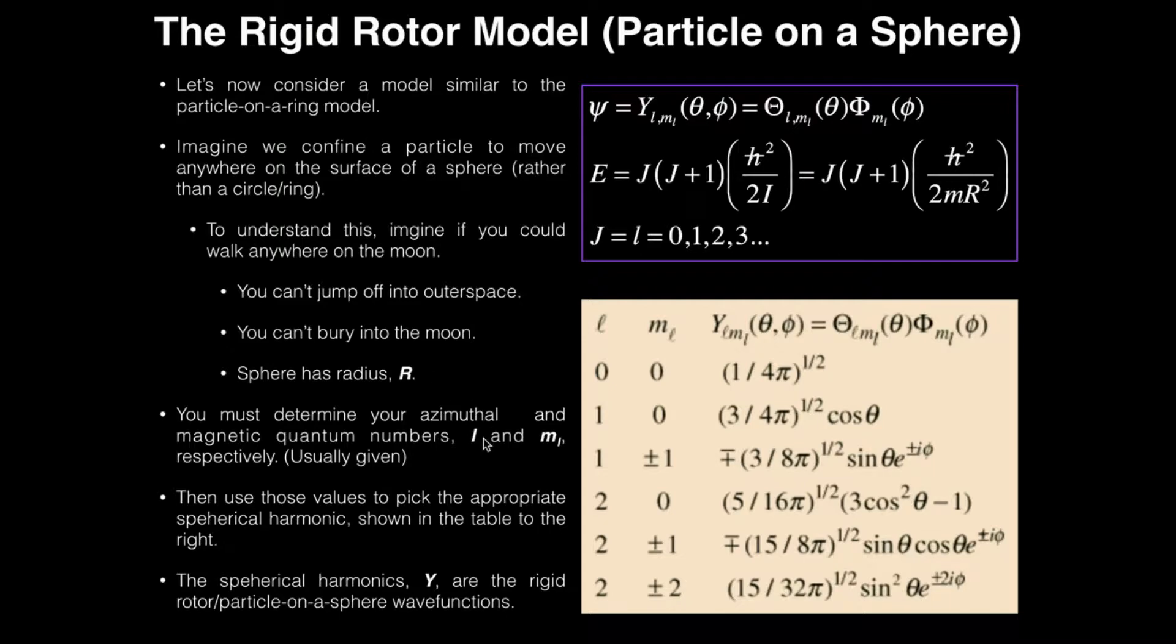You need to know the azimuthal quantum number and you also need to know the magnetic quantum number. These are usually going to be given to you if there's a problem.